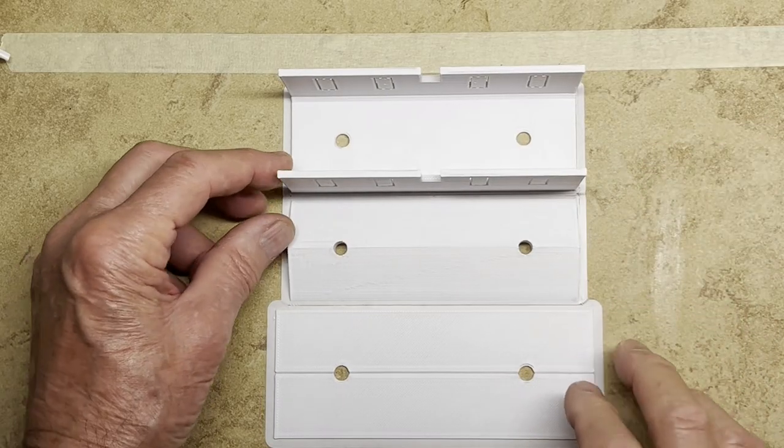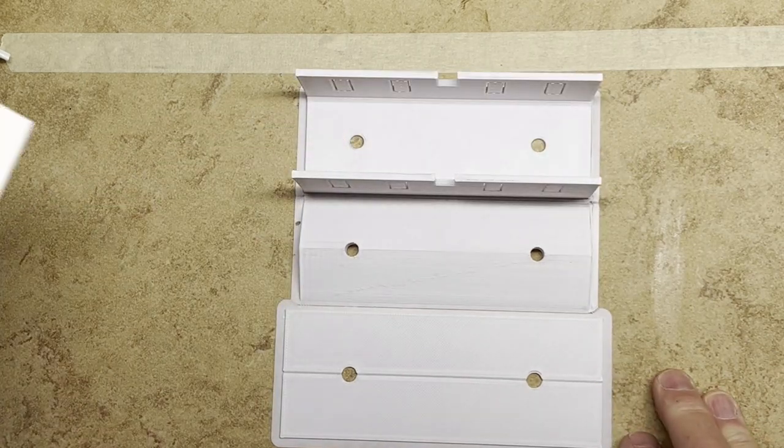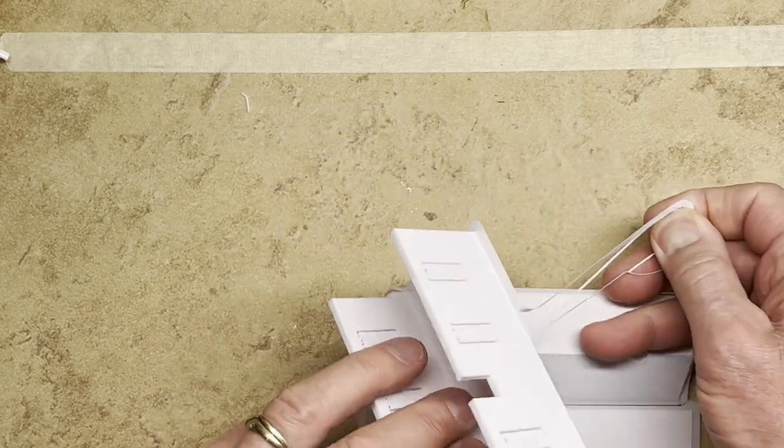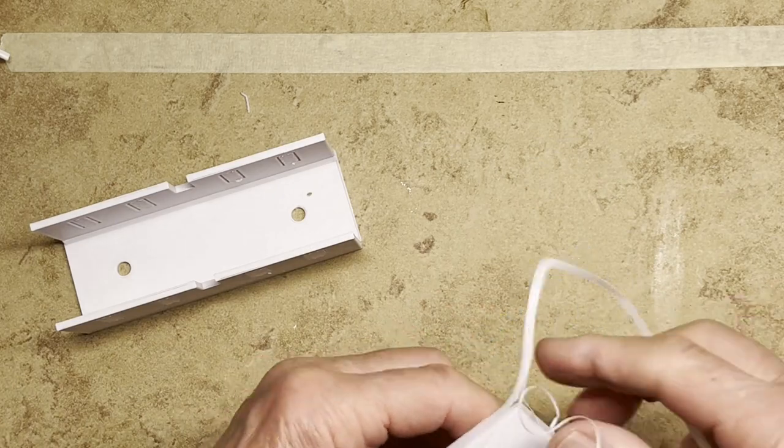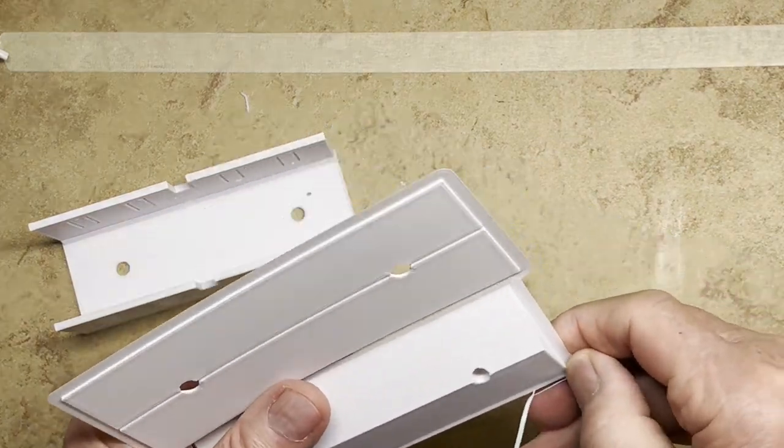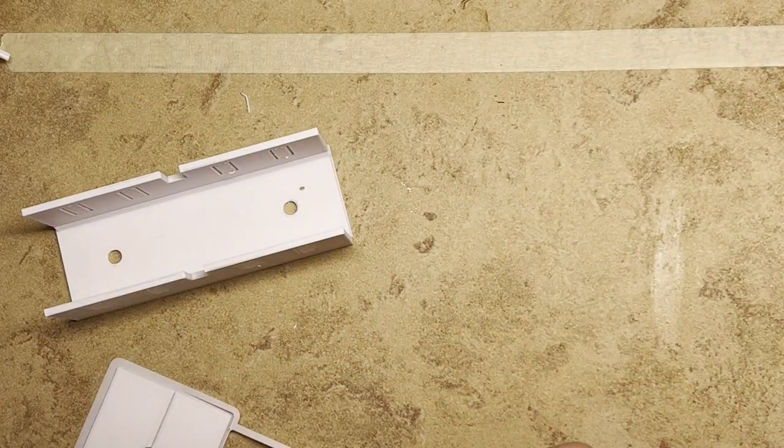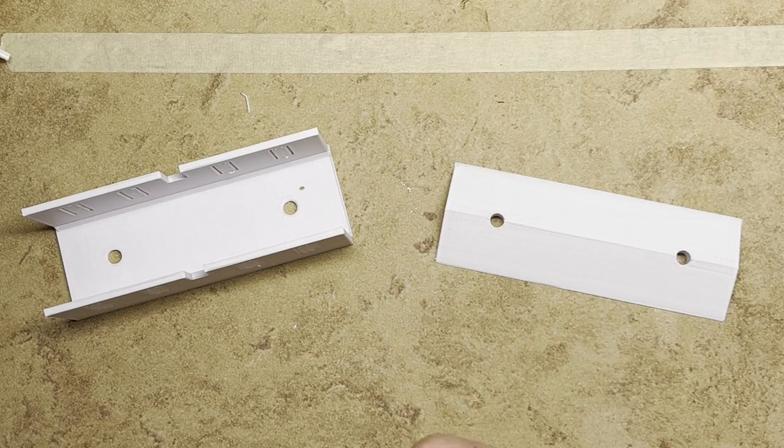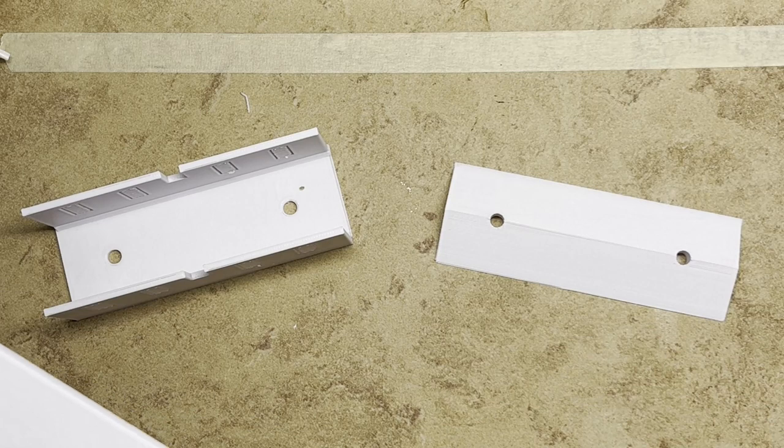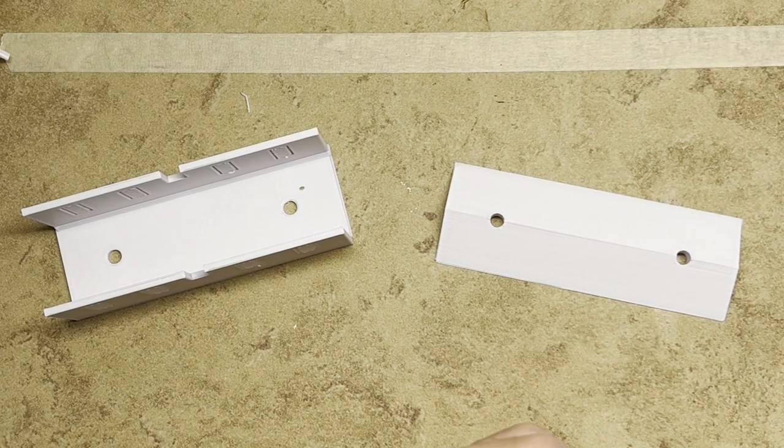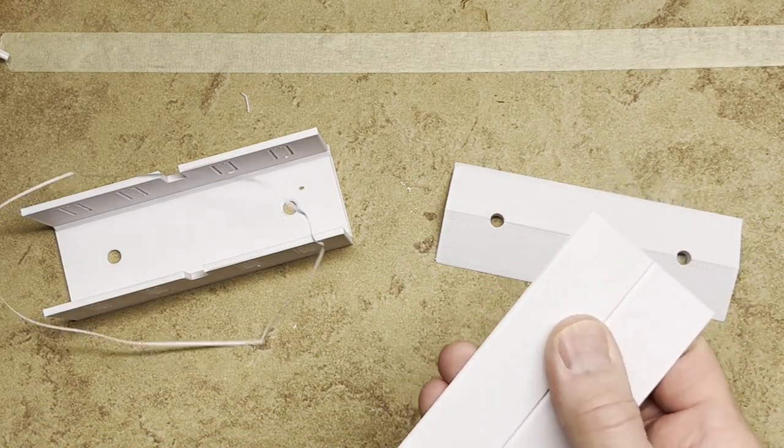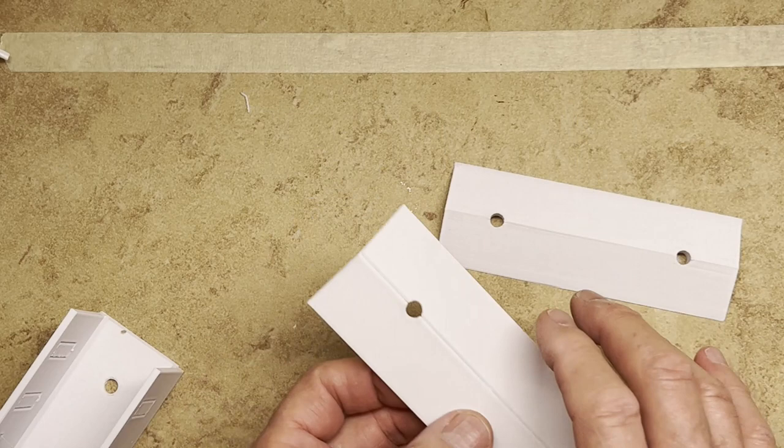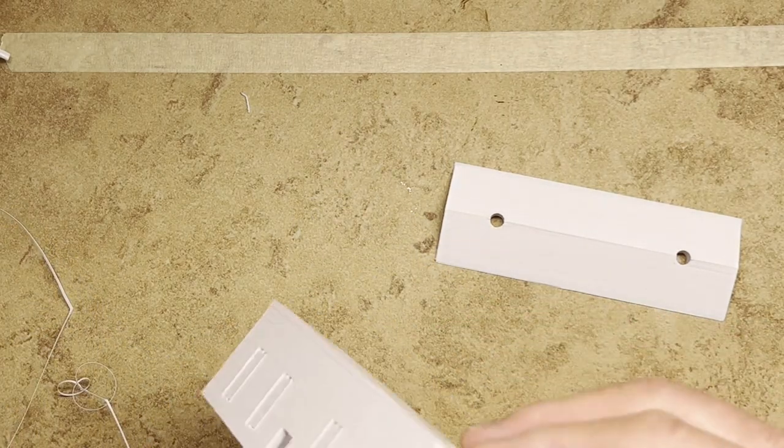I decided it was better to print these parts out flat like this rather than the whole building in one piece. So these come out with a brim which just comes off. The brim helps to hold it to the tape to the plate when it's printing. I put a little angle there so it bends but doesn't come apart. I'll have to sand this down a bit.